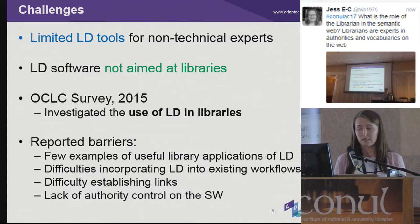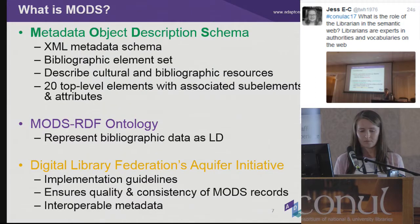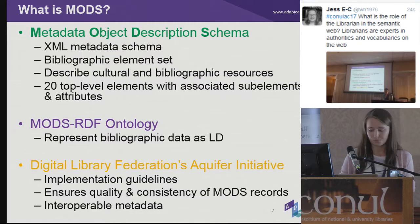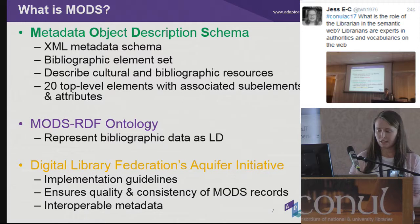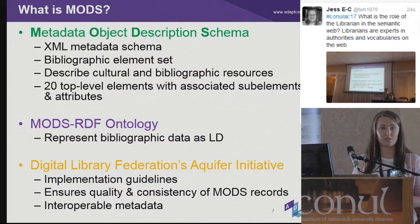Further barriers included difficulty establishing links between resources and lack of authority control on the semantic web. These challenges were also experienced by DRIS, and so this led us to decide to design a bespoke cataloguing interface for DRIS that would allow them to generate bibliographic records in RDF.